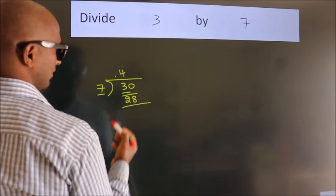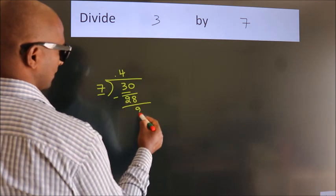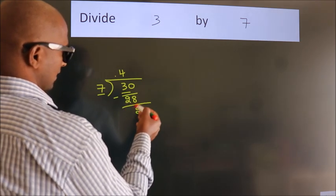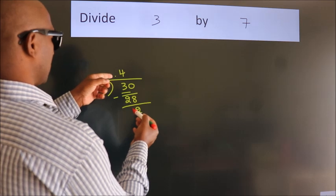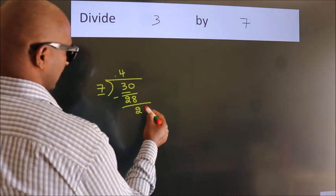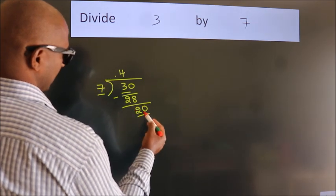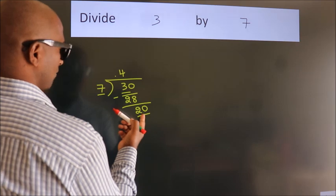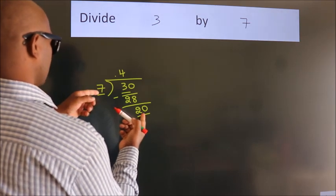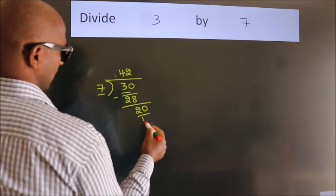Now, we should subtract. We get 2. After this, we already have the decimal. So, directly take 0. So, 20. A number close to 20 in 7 table is 7 twos, 14.